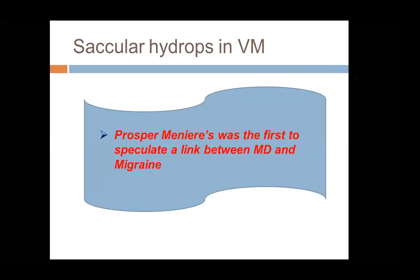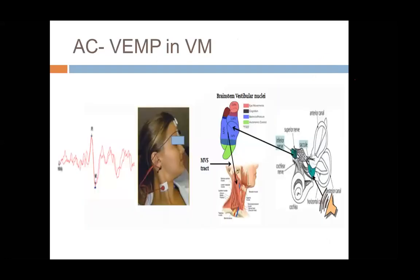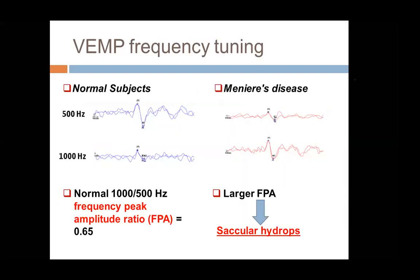Interestingly, Prosper Meniere was the first to speculate a link between Meniere disease and migraine. In our study, we went to prove or disprove the hypothesis that vestibular migraine patients may have saccular hydrops. Our hypothesis is that saccular hydrops is responsible, at least partially or in some category of vestibular migraine patients, for their manifestations. Our approach to prove or disprove this was using cervical VEMP, or cVEMP.